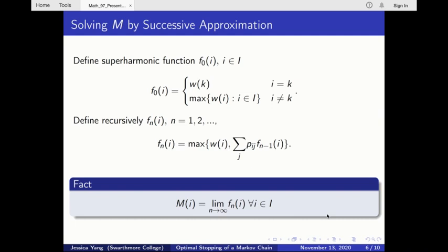With Dinkin's theorem, we are able to solve the maximum expected value function by a successive approximation. We first define a superharmonic function f sub 0 that equals the reward of the absorbing state at the absorbing state and the greatest reward in the state space otherwise. We then recursively define function f sub n to be the maximum between the reward from stopping the process and the expected reward from continuing the process, but with f sub n minus one being the reward function.